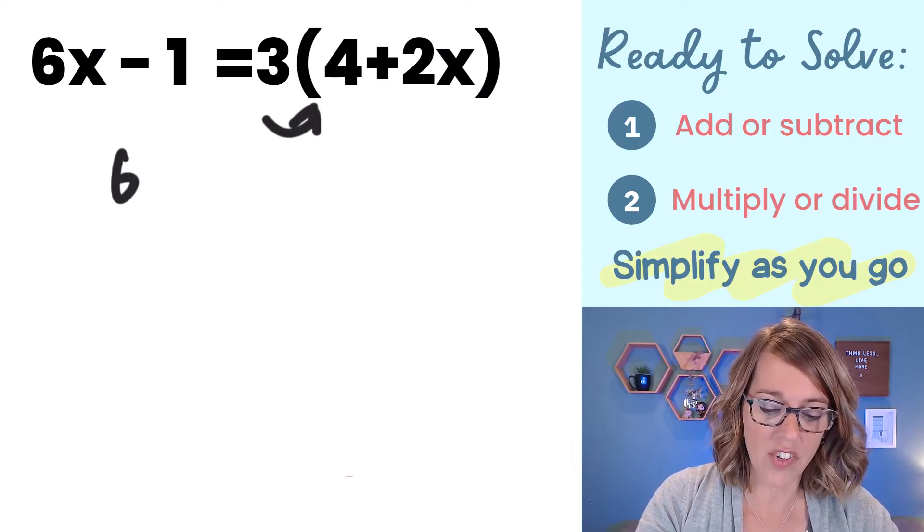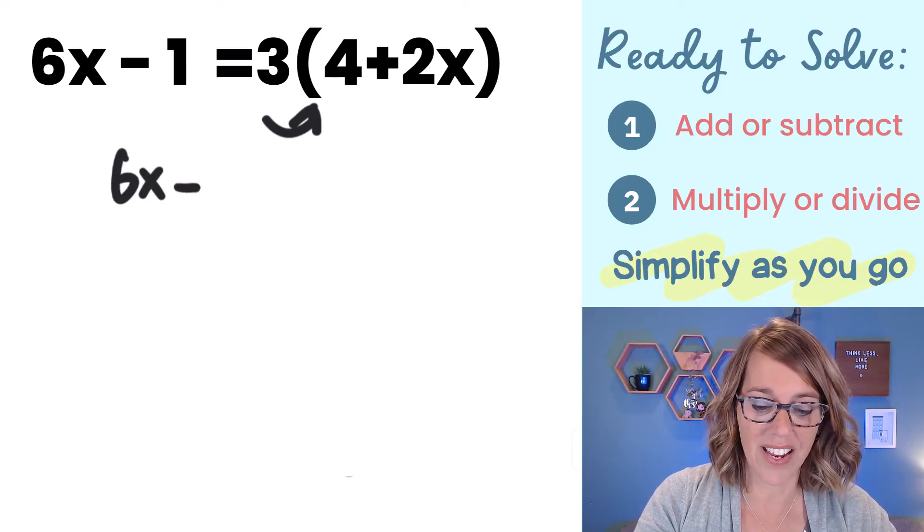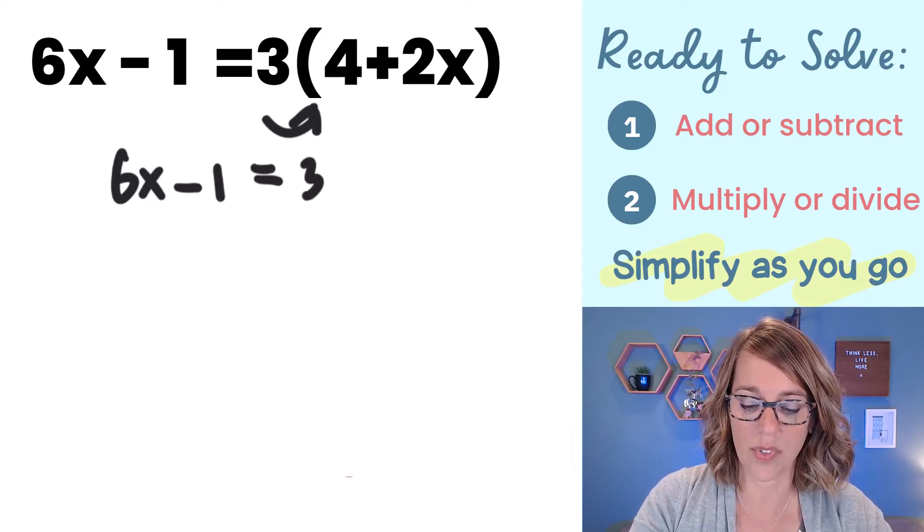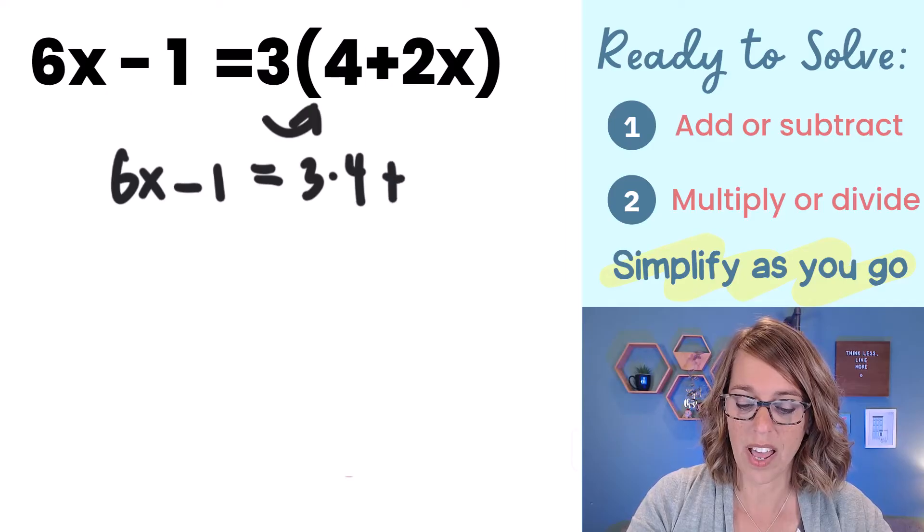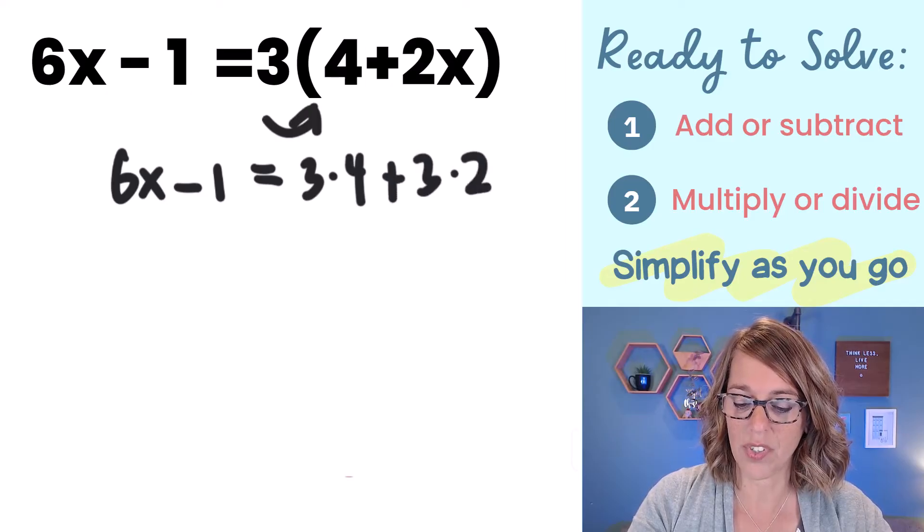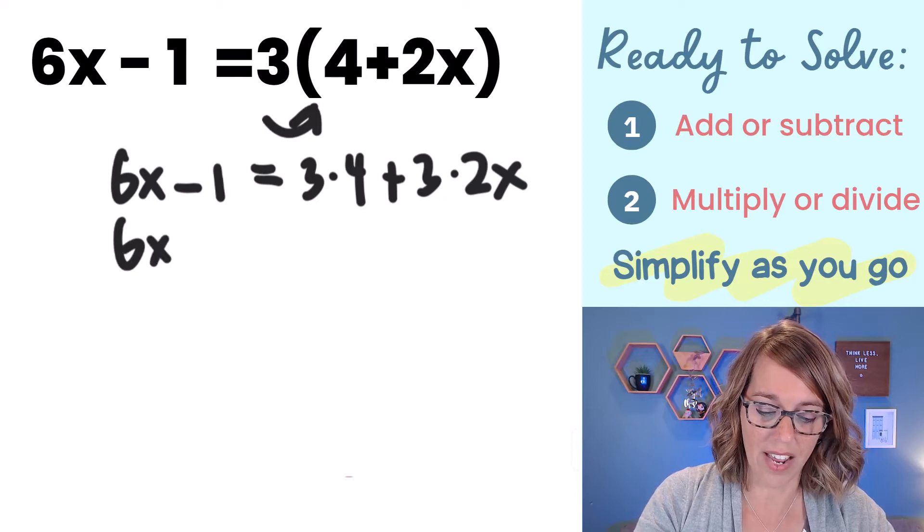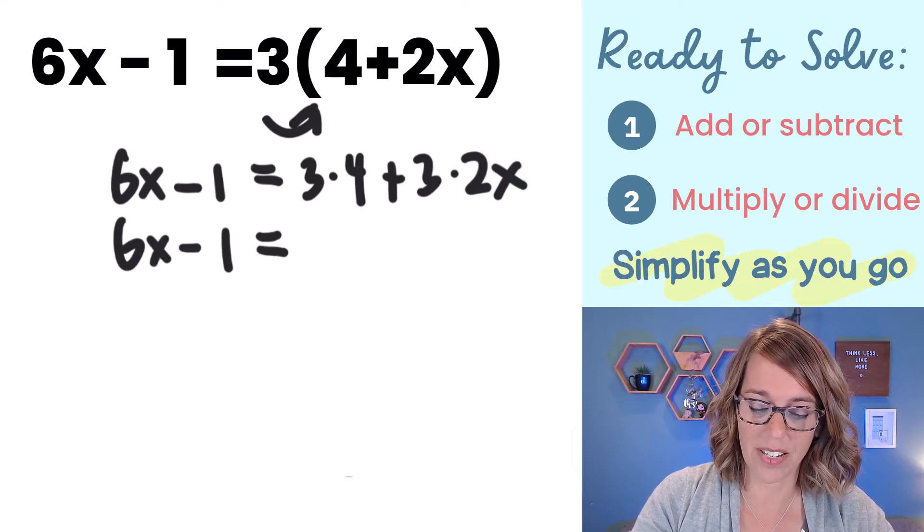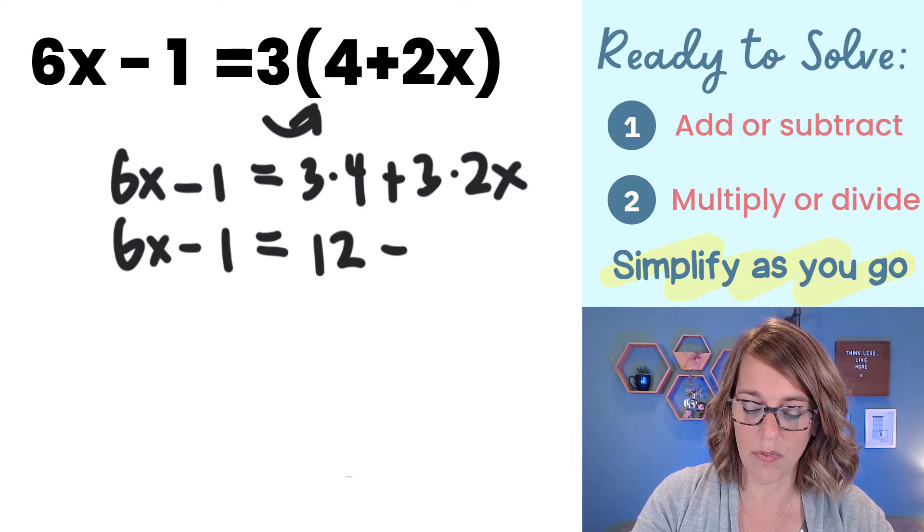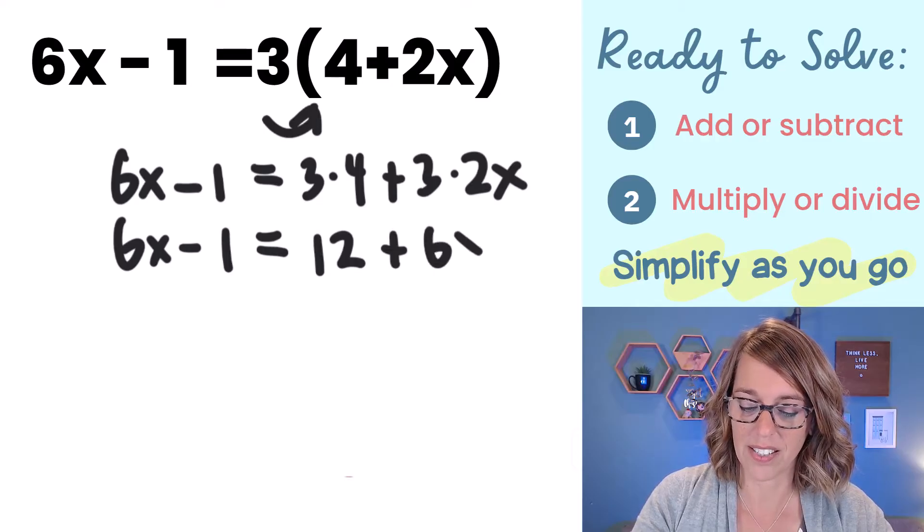I'm not going to make any changes to the left hand side. So 6x minus 1 is equal to 3 times 4 plus 3 times 2x. Let's go ahead and do the math on that right hand side. So 6x minus 1 is equal to 12 plus 6x.